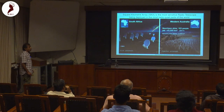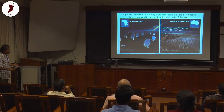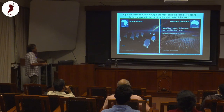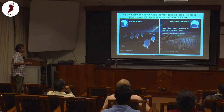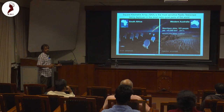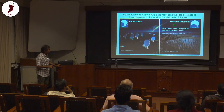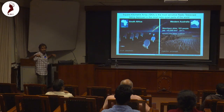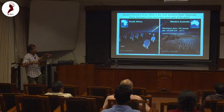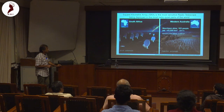The Square Kilometer Array is located in two continents—one in South Africa, one in Western Australia. The dish-type antennas are located in southern Africa, while the aperture array—basically antenna dipoles—is located in an extremely radio-quiet place. Our colleagues have spent a lot of time commissioning the precursor prototype of the SKA about 10 years ago. The population density there is only about 163 people per a very large area, compared to Bangalore's approximately 2,200 people per square kilometer.